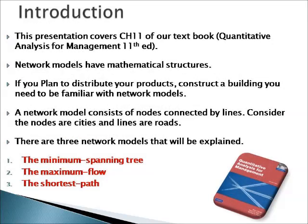Chapter 11 in our textbook talks about network models, which are like mathematical structures. If we plan to distribute our products or construct a house, we need to be familiar with these models. The network models consist of two things: nodes and lines. If we think about the nodes like locations or cities, and the lines or arcs like roads or pipes, we will be able to understand these models better.